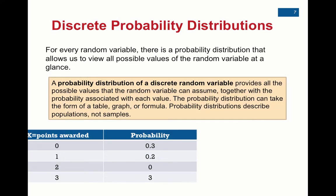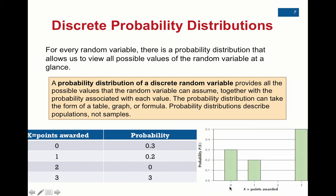So discrete probability distributions. We go from the actual random variable to create a distribution, where with each outcome, we write out the probability. So sometimes we can do that in a table like you see here. You're also going to see this graph where we can put it into like a histogram or something like that.